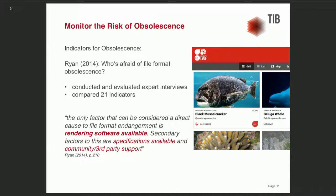Ryan compares file formats to species and file format obsolescence to species extinction. She conducted and evaluated expert interviews, comparing 21 indicators for file format obsolescence using the same methods used for species extinction. She concludes that the only direct cause of file format endangerment is rendering software availability, with secondary factors like specifications available and community or third-party support. This is the one point we need to monitor when monitoring the risk of obsolescence.